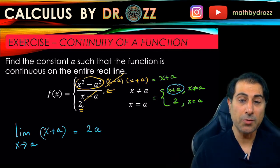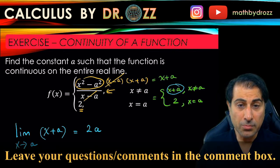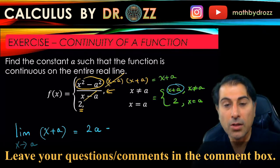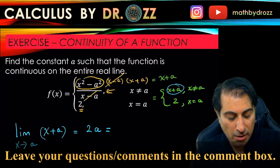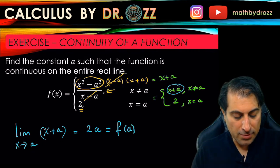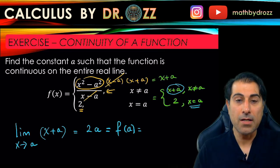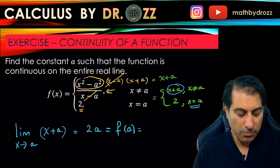And for this function to be continuous at x equals a, the limit value, in this case 2a, has to be equal to the value of the function at a, that's f of a. It's just the second piece over there because whenever x equals a, the function takes the value of 2.